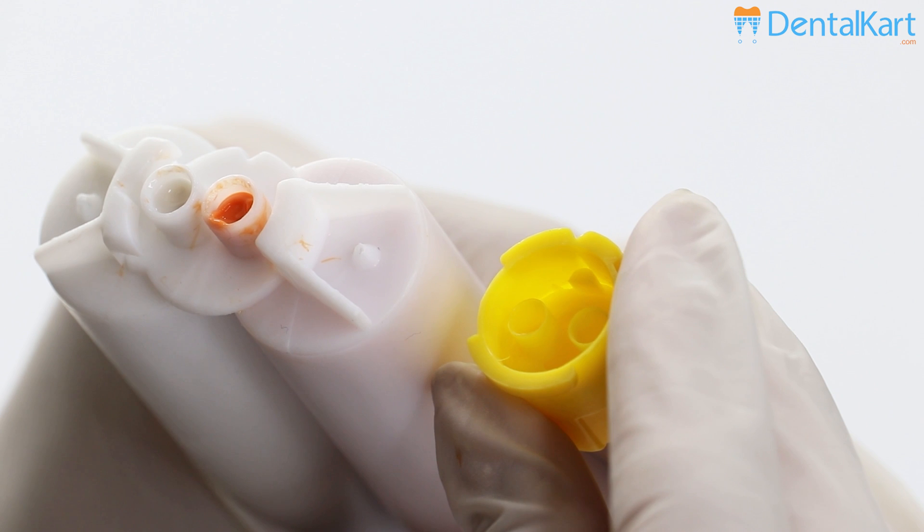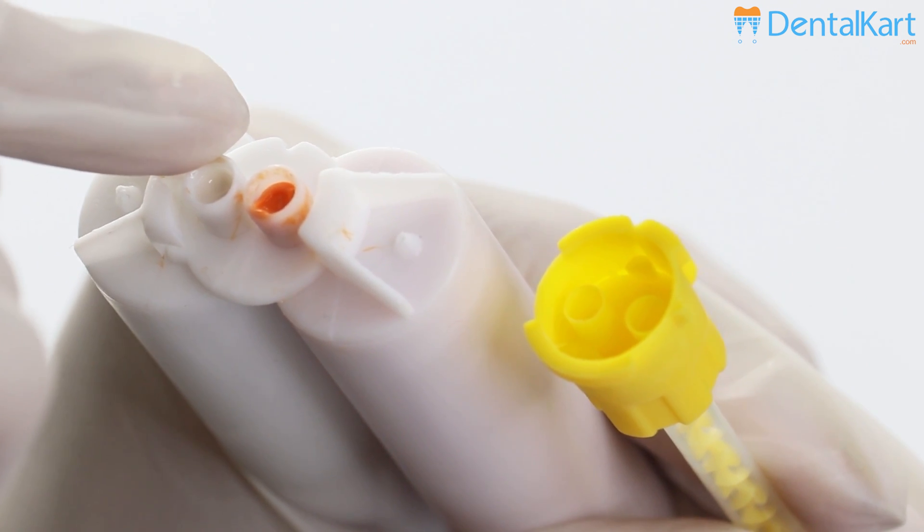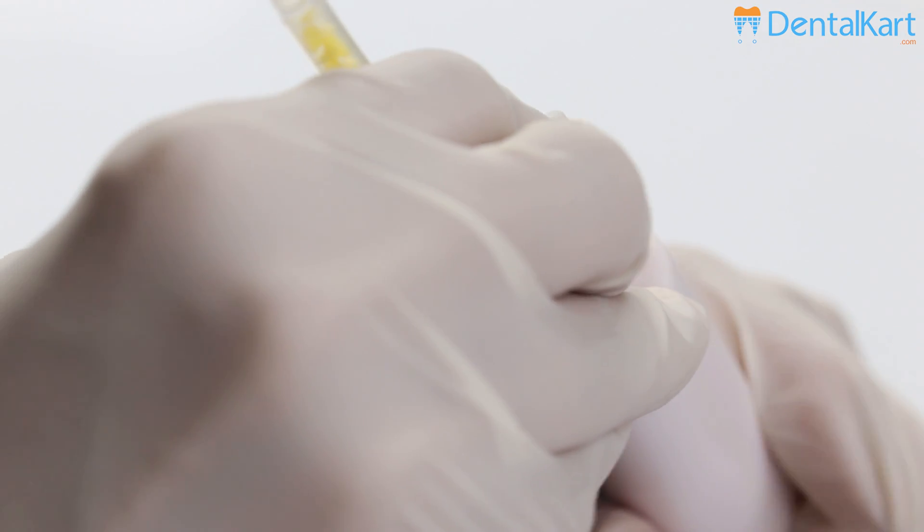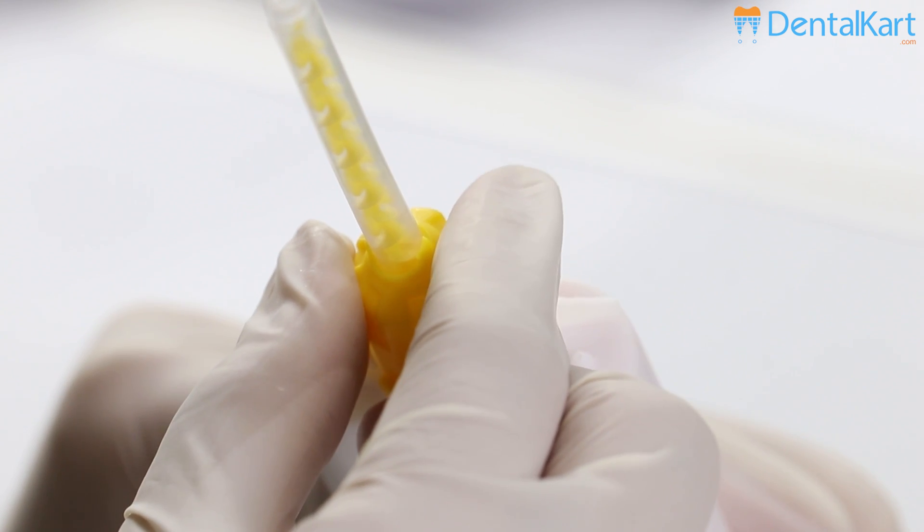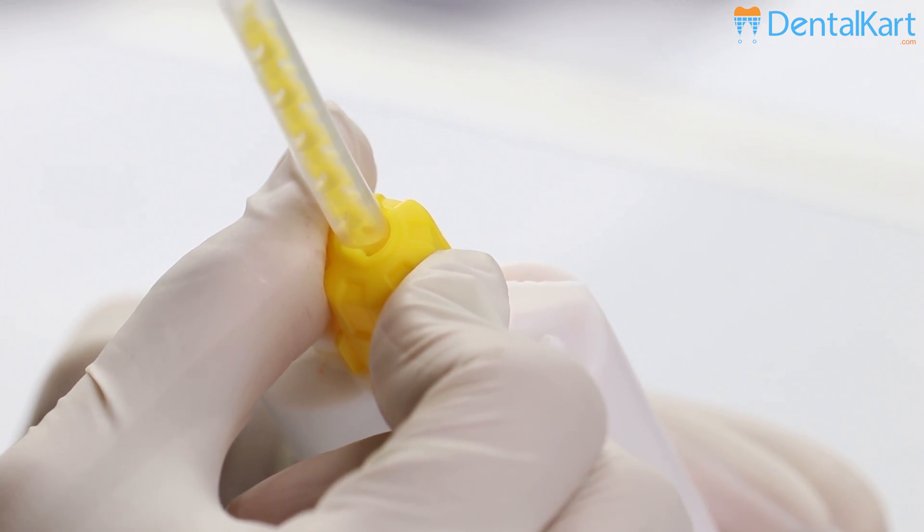Align the V-shaped notch on the rim of the mixing tip to the V-shaped notch between the cartridge barrels. Push firmly to attach the mixing tip. Then rotate the collar of the mixing tip one-quarter turn clockwise to secure it to the cartridge.